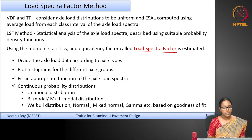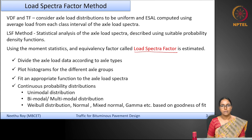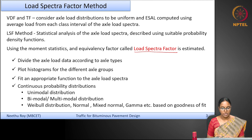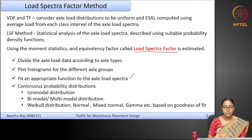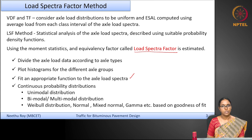The axle load data is divided according to axle load types — for example, single axle single wheel, single axle dual wheels, tandem axle, tridem axles, etc. You can then plot histograms for the different axle load groups. For this histogram, you try to fit an appropriate load spectra. Since these are positive values, you can choose any continuous probability density distribution that best fits the data.